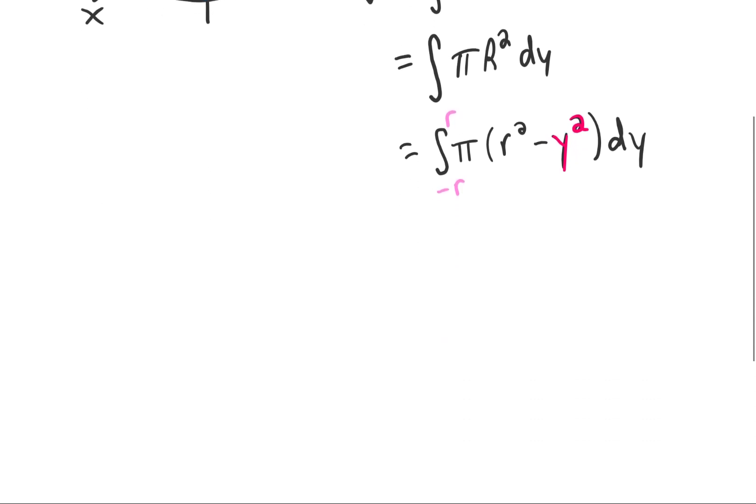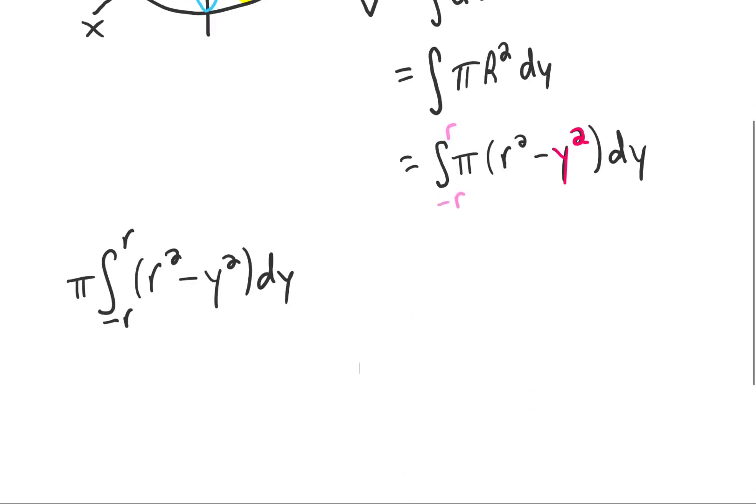Now it's all over but the integrating. Let's go through it. I'm going to pull the pi out of this integral and recognize that we're integrating with respect to y. Meaning that this r squared here is just some constant. When we integrate some constant, we just multiply by the variable of integration. When we integrate negative y squared with respect to y, we get negative one third y cubed.